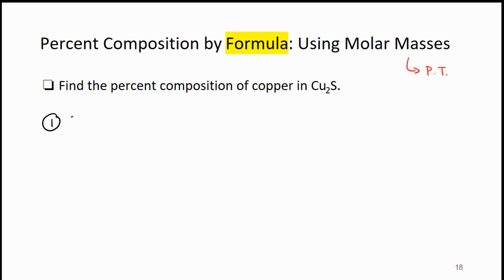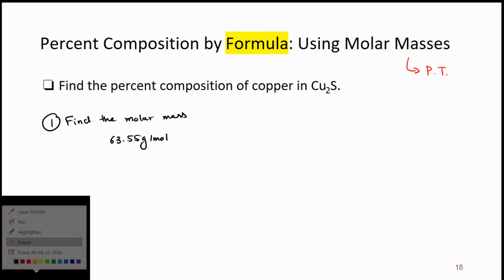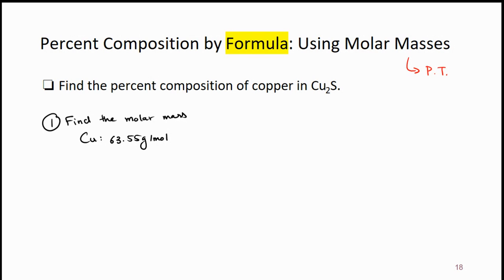For this kind of problem, the first step you should do is find the molar mass. The molar mass of copper is going to be 63.55 grams per mole — that's from the periodic table. Copper, not carbon. Copper is 63.55 grams per mole, and we need two of them because there are two coppers. So two coppers is 63.55 grams per mole times two.